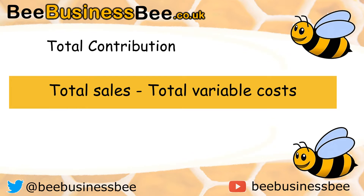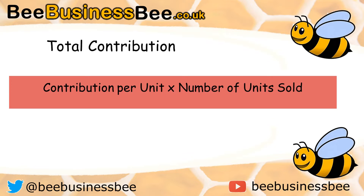You may also be asked to calculate total contribution. Total contribution is total sales or total revenue minus total variable costs. It's really important that you focus on those two key terms — contribution per unit and total contribution — as the language used in the exam could potentially catch you out. Total contribution can also be calculated by doing contribution per unit multiplied by the number of units sold, effectively combining both formulas.